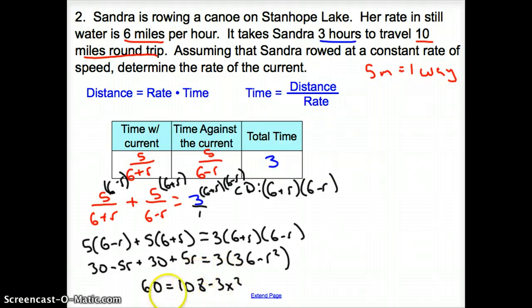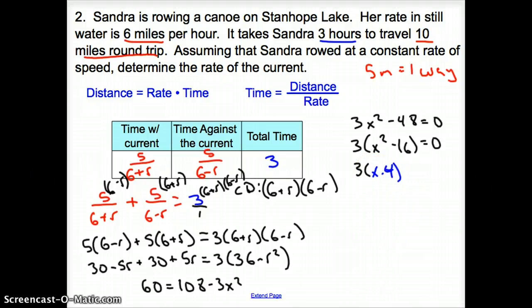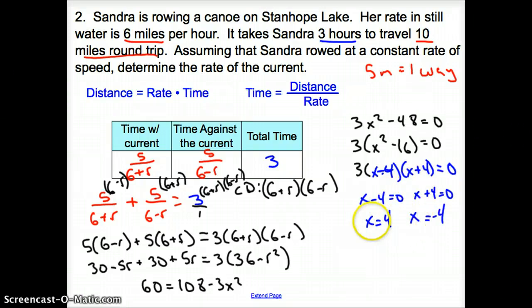I'm going to distribute and clean up. I have 30 plus 30 which is 60 equals 108 minus 3R squared. I'm going to move everything over to the other side, so it's 3R squared minus 48 equals 0. I'm going to factor out that 3, so it's 3 times R squared minus 16 equals 0. Factor what's inside the parentheses, so it's 3 times R minus 4 times R plus 4 equals 0. Solving for R, R equals a positive 4 and R equals a negative 4. We cannot have a negative rate, so we're left with R equals 4, and so the rate of the current was 4 miles per hour.